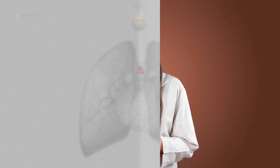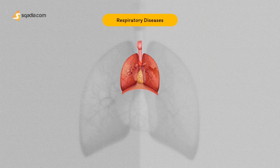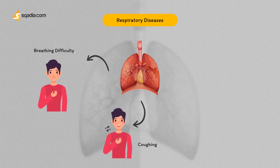Asthma and COPD, known as chronic obstructive pulmonary disease, are both respiratory disorders that often lead to confusion between the two. Being respiratory diseases, both will have quite common symptoms. You may observe someone having difficulty breathing, coughing more often, and producing a wheezing sound while breathing.